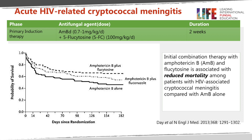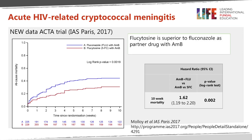In that trial, the amphotericin B and fluconazole combination appeared to be of intermediate efficacy. We now have new data from the ACTA trial, carried out across a number of hospitals in different countries in sub-Saharan Africa, which has clearly shown that flucytosine is superior to fluconazole as a partner drug given with amphotericin B.